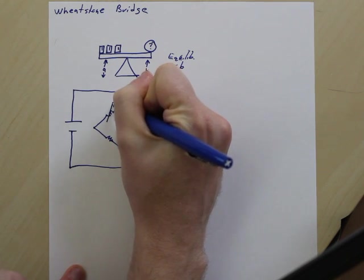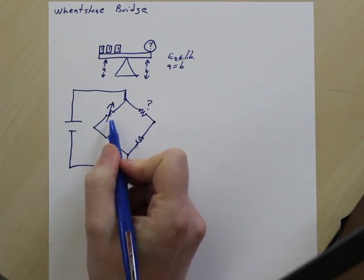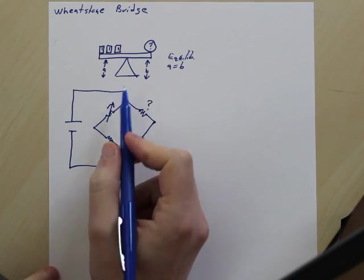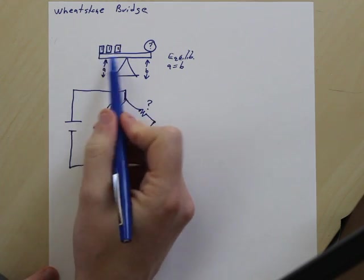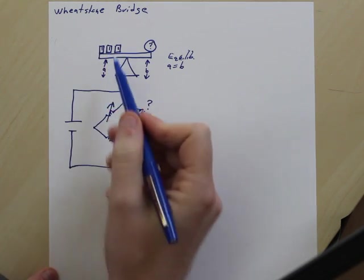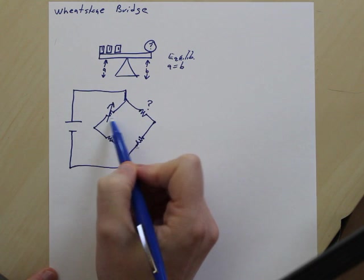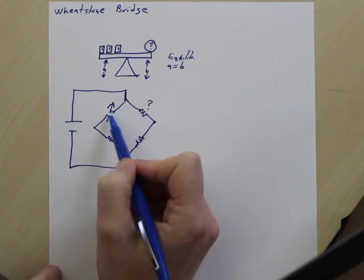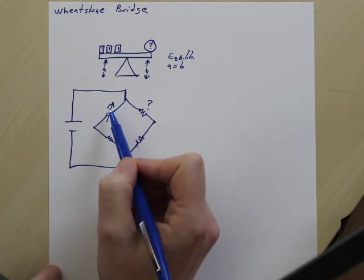This resistor, we're going to have a changeable value that we know. So essentially, that's how we change the amount of weights on this scale, is we can change it. And that's usually with a potentiometer, and we can turn it to whatever unknown resistance we have, so maybe 10.